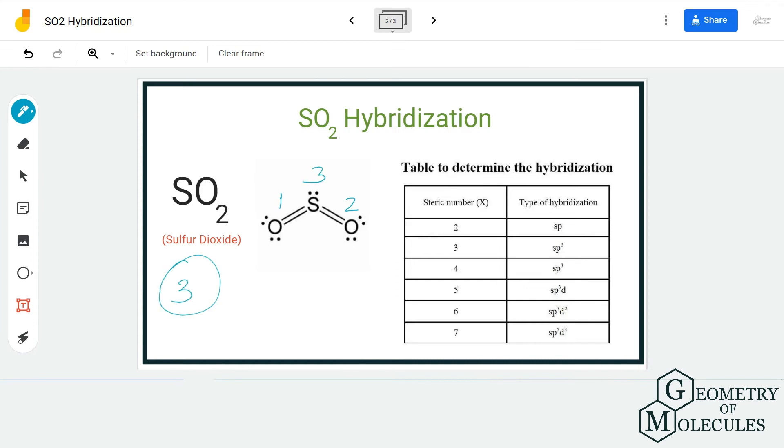As a result, it also corresponds to sp2, and hence the sulfur atom in this molecule has sp2 hybridization. And it will also be the same for both these oxygen atoms over here.